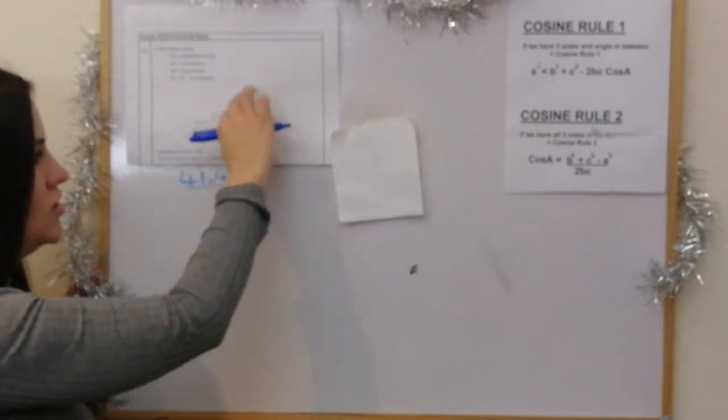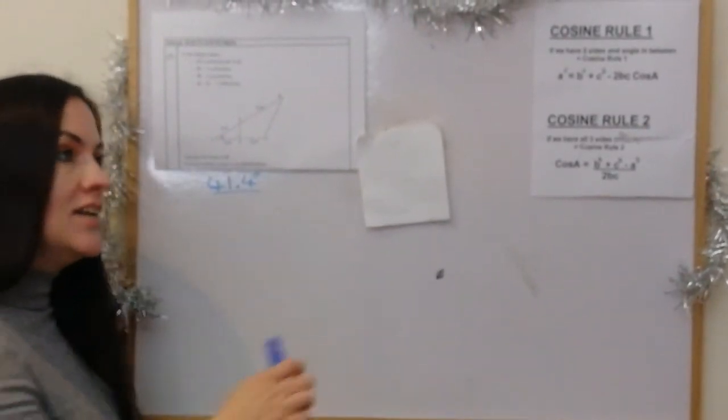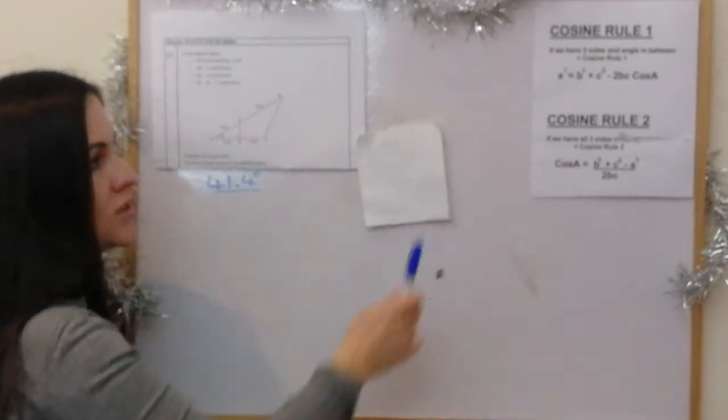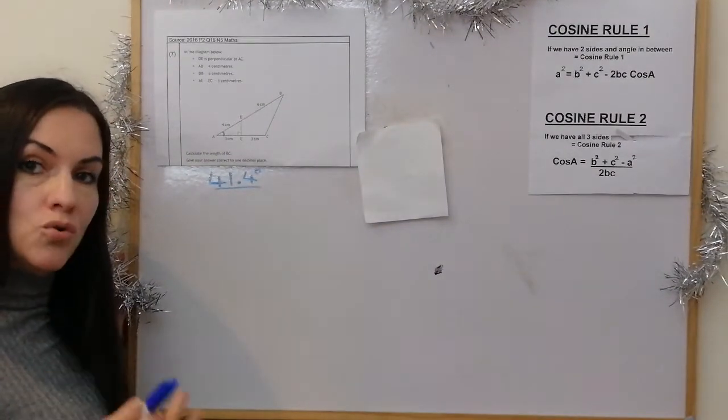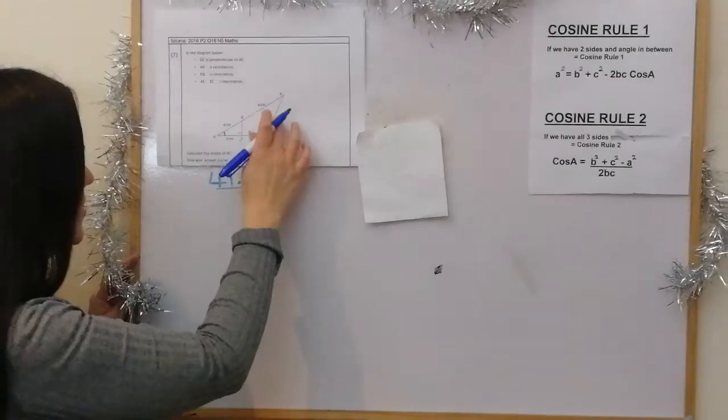So we've got two sides and we've got the angle in between. And as we stated over there, if we have two sides and the angle in between, it's cosine rule 1. So this is going to help us get this one.